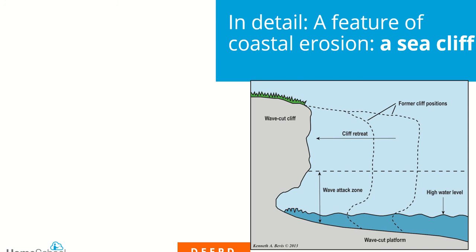We're going to go through a feature of coastal erosion in detail, which is our sea cliff. The reason we do a sea cliff is that it's simply the easiest one to do. This question might come up and it'll always ask you to talk about a feature of coastal erosion or deposition — it won't specifically ask for a cliff. So first thing: Define. We must define what a sea cliff is — think in your head, what is a sea cliff?